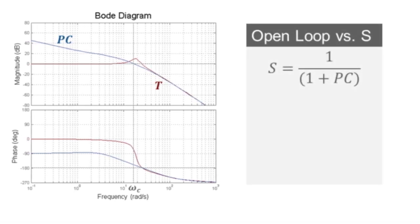In a similar fashion, if we look at the sensitivity transfer function, when PC is much greater than 1, S will approximate 1 over PC, which in a logarithmic scale means the negative of PC, so the trace of S will be symmetric with respect to 0 in the low-frequency region.